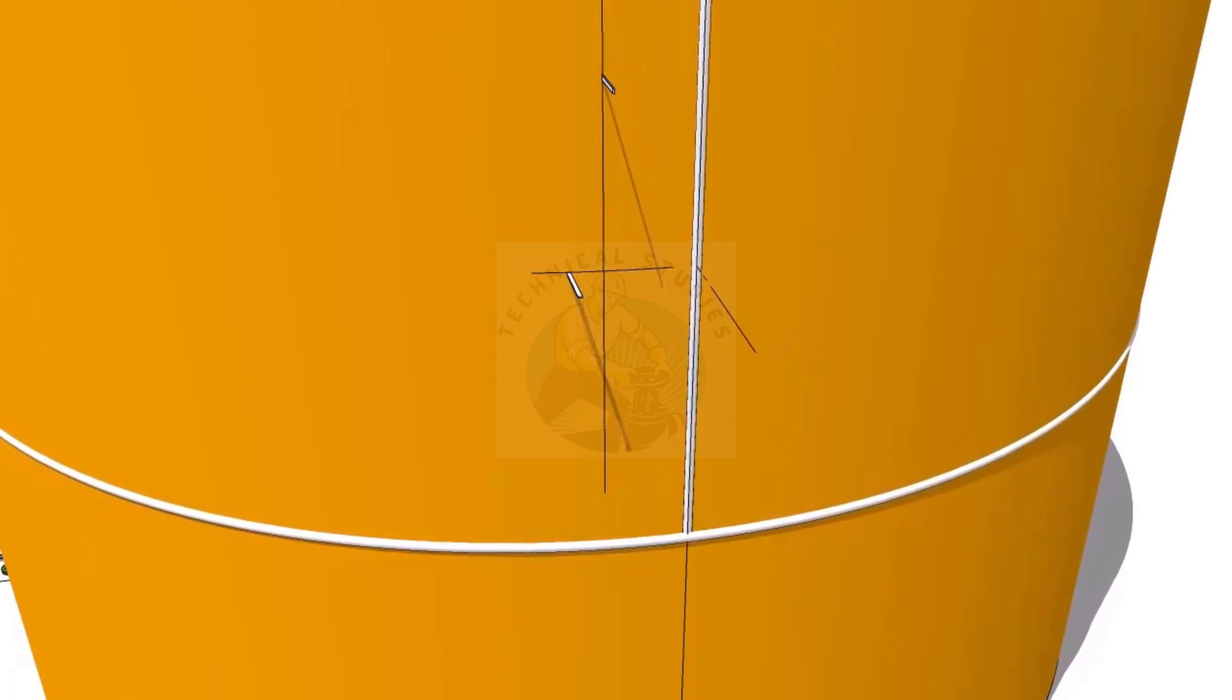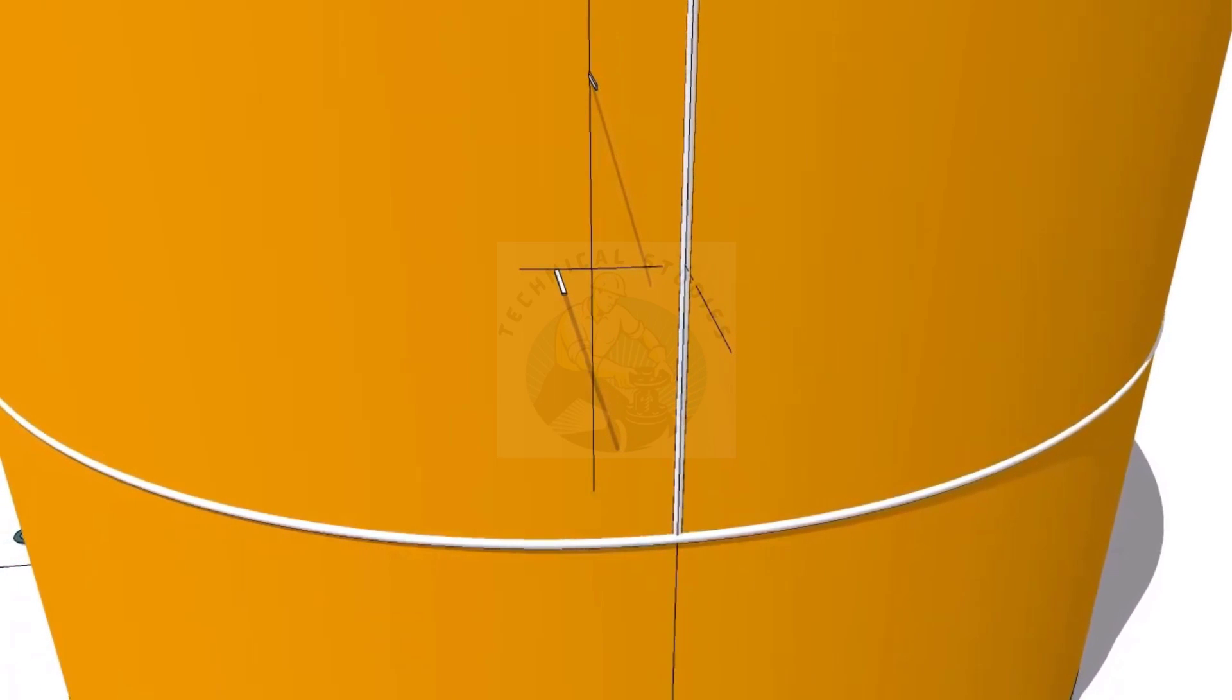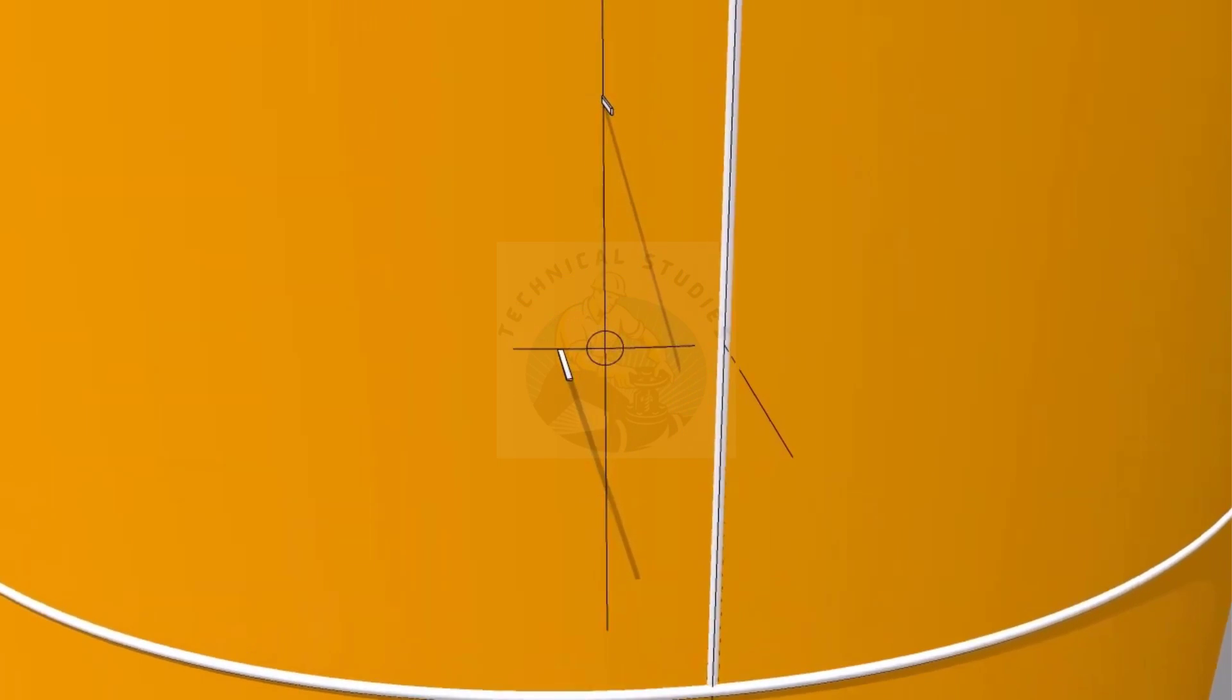After marking the center of the nozzle, punch mark the center point. Draw the diameter of the nozzle including the root gap. Thank you for watching.